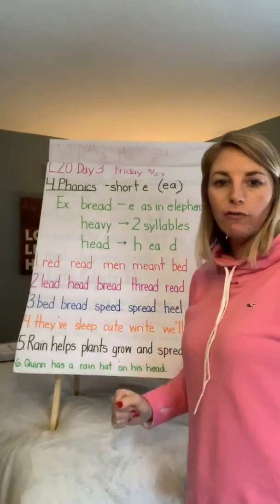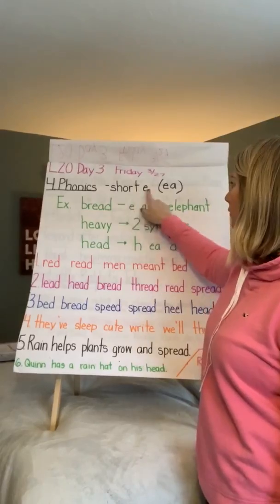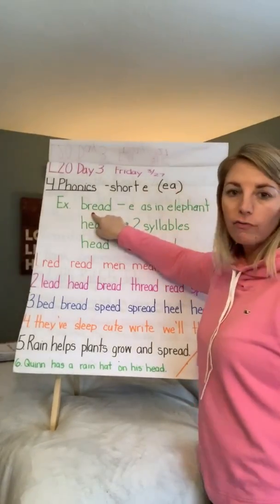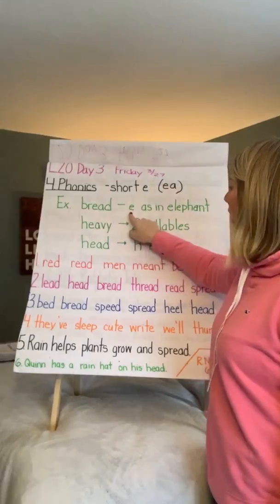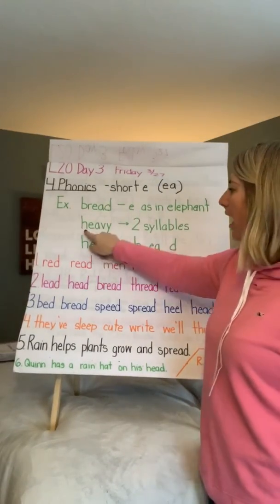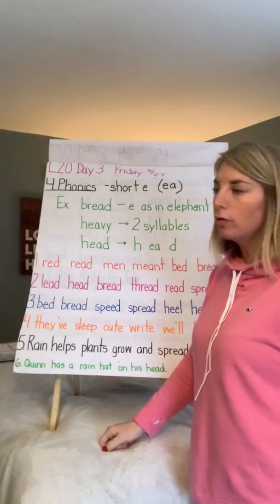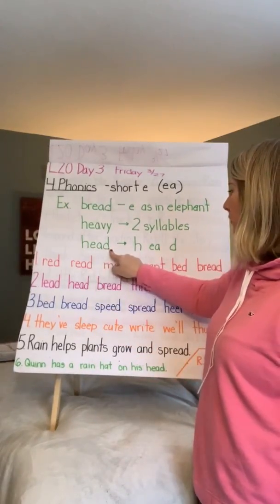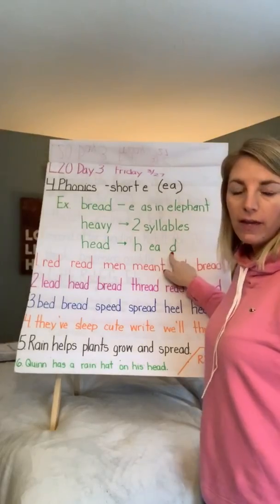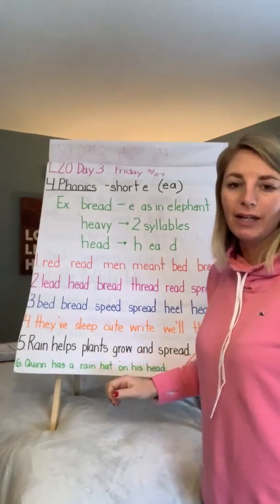Now for our phonics lesson. Short E — E-A. Here's an example: bread. 'Eh' as in elephant. Heavy — heavy has two syllables. Head — H-E-D. Think about how you would break it apart if you were trying to write it.